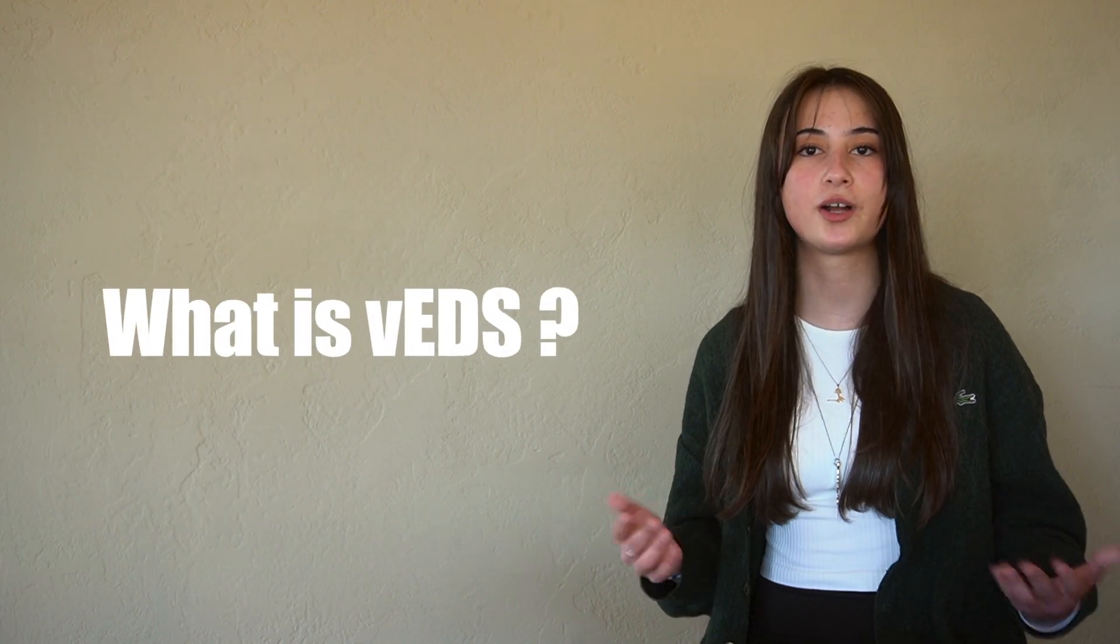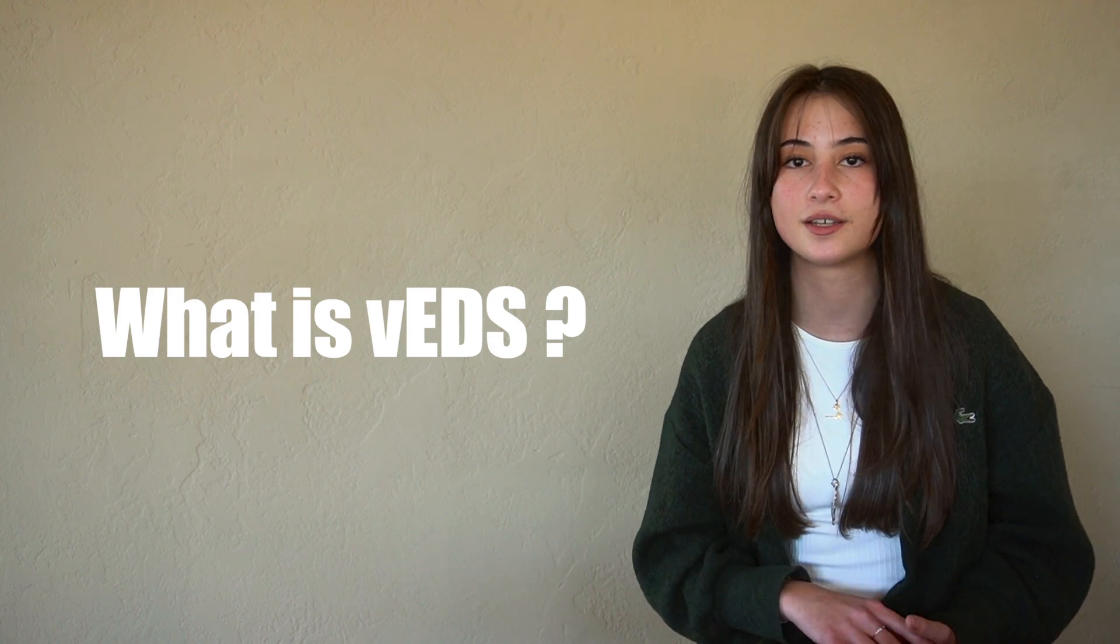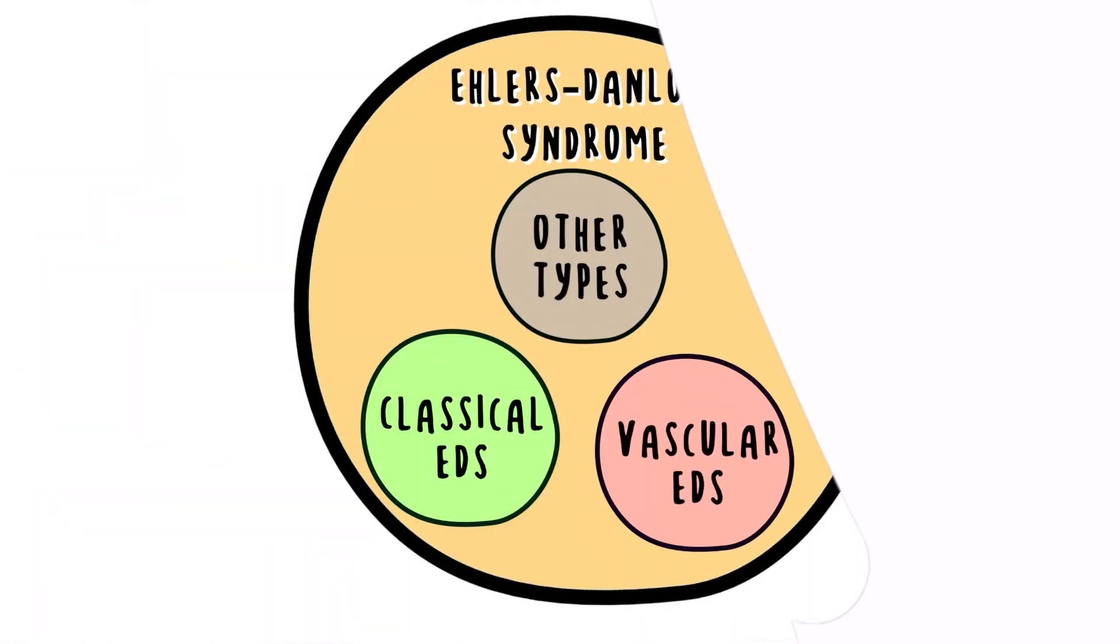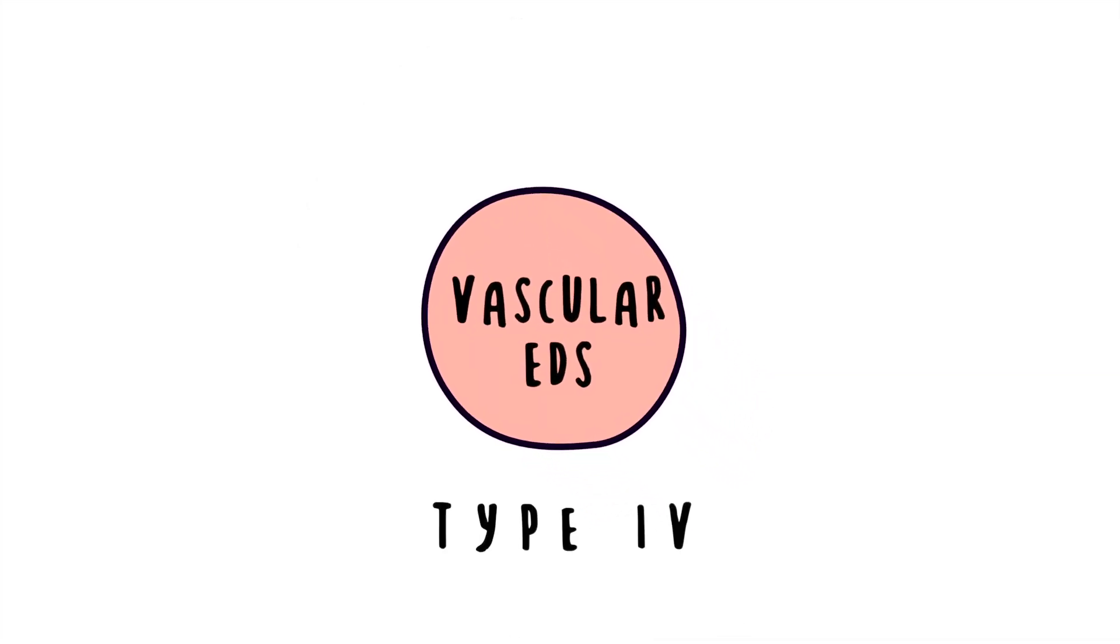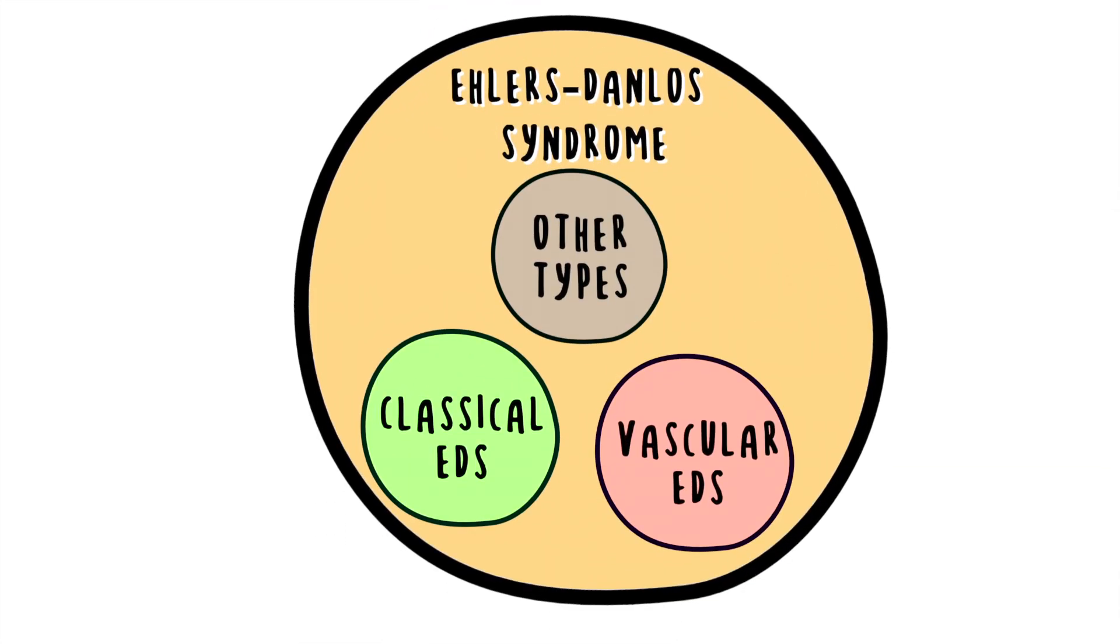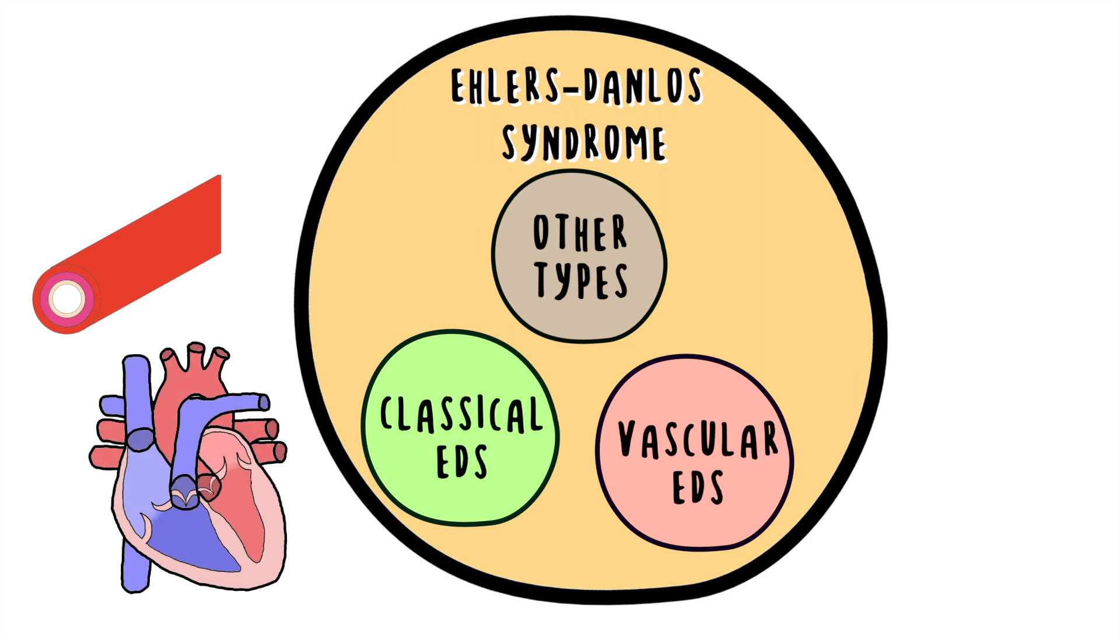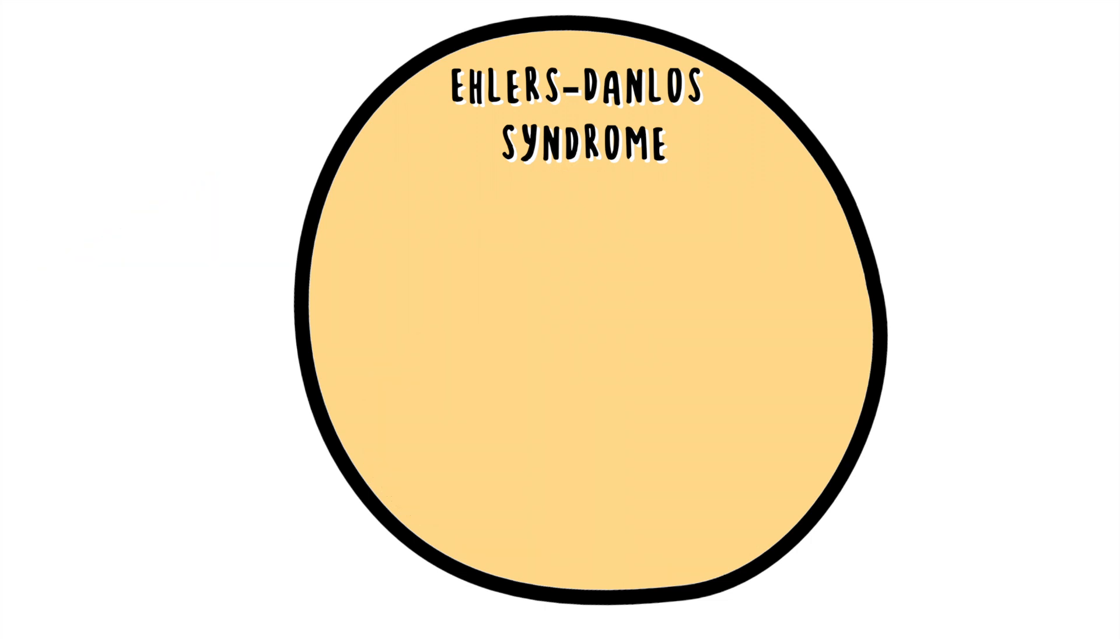But first, what is vascular Ehlers-Danlos Syndrome or for short, VEDS? Vascular EDS is a subtype of Ehlers-Danlos Syndrome, which is a connective tissue condition. VEDS is also known as type 4 of Ehlers-Danlos. Since it is such a broad disease, most of what I'll touch upon in this video, except complications affecting the vascular system, applies for Ehlers-Danlos as a whole and not just type 4.